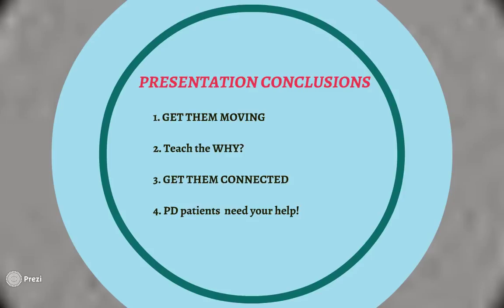When you talk to your patients, explain a little bit about the basic version of the research and what it shows they can actually do to create change in their brain, and why exercise is such an important piece of that. The third thing I hope you take away is that your patients need to be connected in the community. Parkinson's is a progressive, lifelong disease, and they need to have places they can go to get back on the wagon or get information on different classes if their symptoms are changing or getting worse.